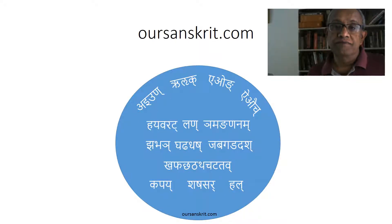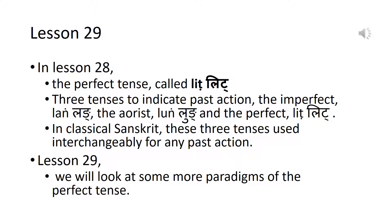Welcome to OurSanskrit.com. This is lesson 29. In the previous lesson, lesson 28, we started looking at the perfect tense called lit by the Sanskrit grammarians. We said that there are three tenses to indicate past action: the imperfect, the aorist, and the perfect. We also said that in classical Sanskrit, these three tenses are used interchangeably for any past action. In this lesson, lesson 29, we will look at some more conjugation paradigms of the perfect tense.